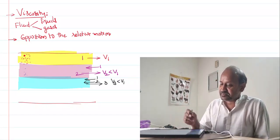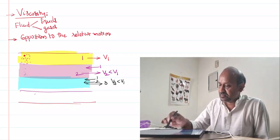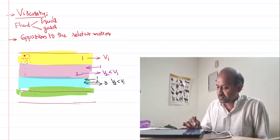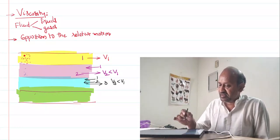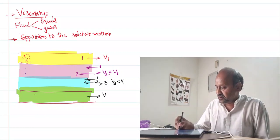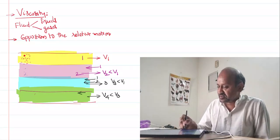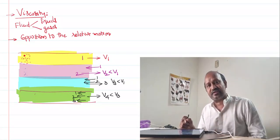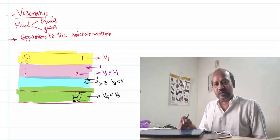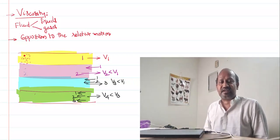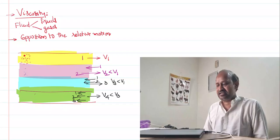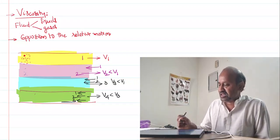Let us consider the next layer — the fourth layer. This fourth layer will have a velocity v4, which is less than its upper layer velocity v3, because this fourth layer experiences opposition due to the first, second, and third layers. So all the upper layers apply opposition on the lower layers, and hence the lower layers become slower and slower. Finally, the bottom-most layer comes to almost a standstill — it will have a very small velocity.